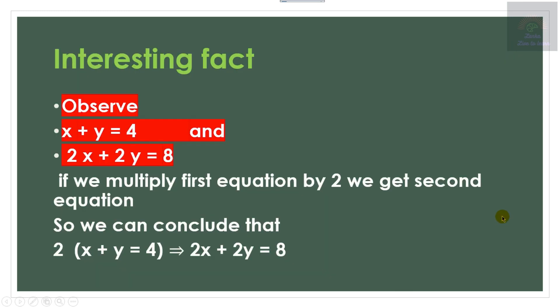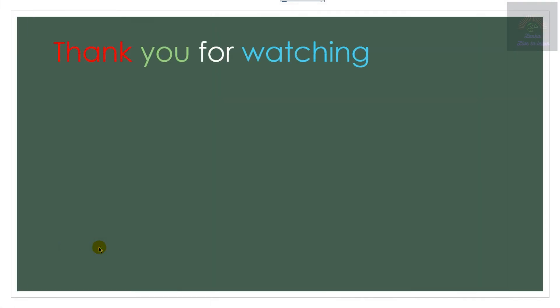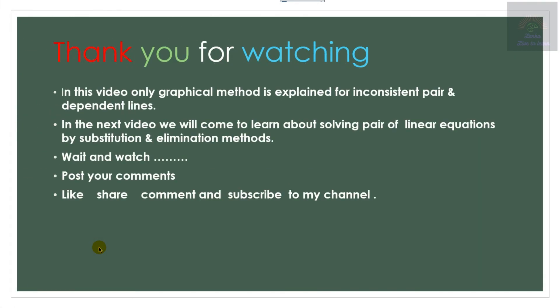We can conclude that dependent lines overlap each other. An interesting fact is that if you take the first equation and multiply it by 2, you get the second equation. You can multiply by 3 or 4 and form many equations, but all are coincident lines. If you draw and plot them on the graph, you will get only one line. If you like this video, please give it a like, share, and comment!